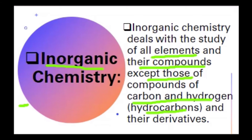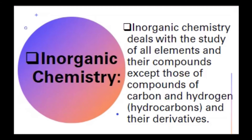For example, an inorganic compound: ammonia, NH3. Here hydrogen exists but carbon is absent — hydrogen is present with nitrogen. So this is an example of an inorganic compound. All compounds in which carbon and hydrogen are not present are studied in inorganic chemistry.